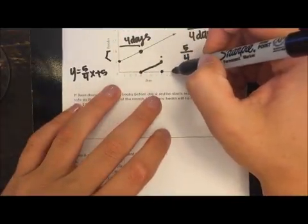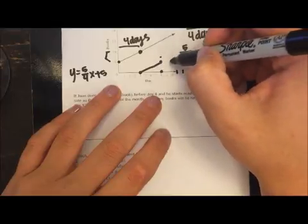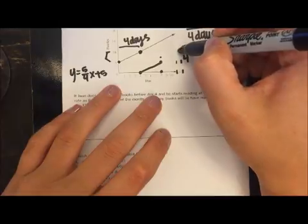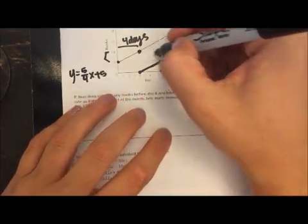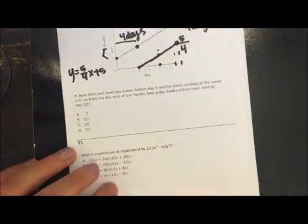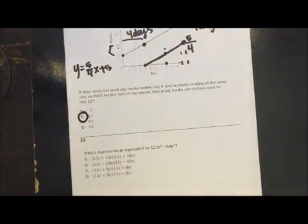So after day eight, day ten, day eleven, day twelve. Alright, so day twelve out here, he's read five more books, so he's up to here. So this point says that he has read ten books, so that would be our option.